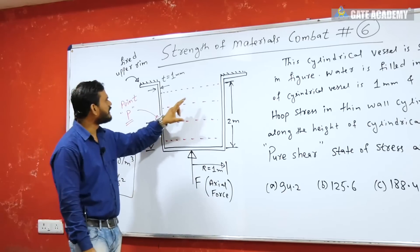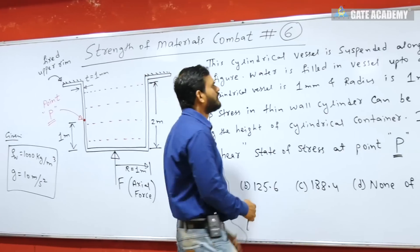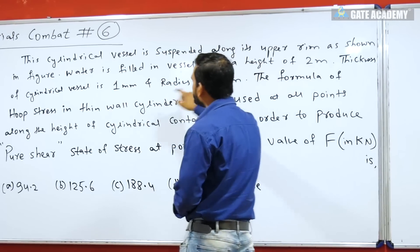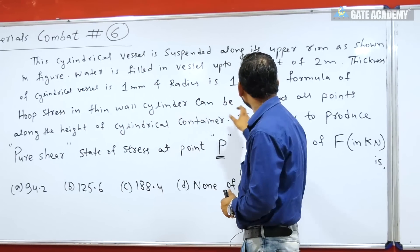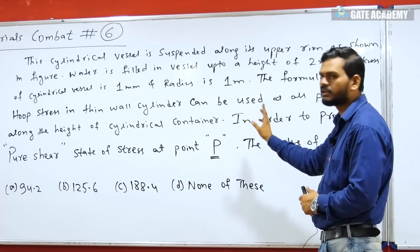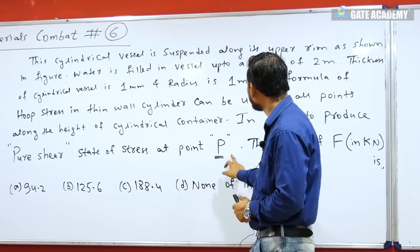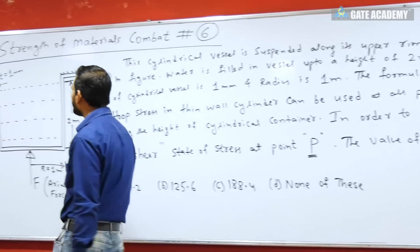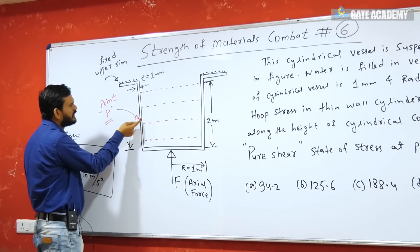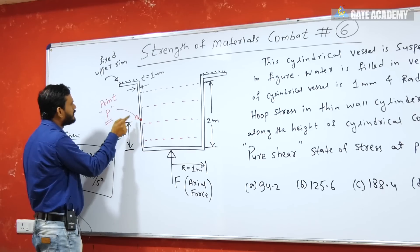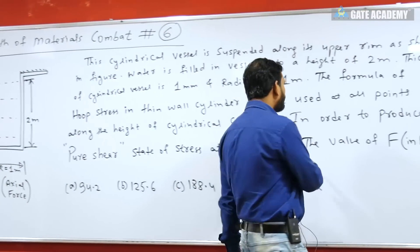And the height of water in the container is 2 meter. You are talking about suspended, height 2 meter, thickness 1 mm, radius 1 meter. Here is the formula of hoop stress in thin wall cylinder. Can be used at all the points along the height of the cylindrical container. In order to produce pure shear state of stress at point P, here is the point P which is at the base. The height of 1 meter located here on the wall cylindrical wall. You have to produce pure shear state of stress.